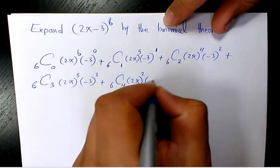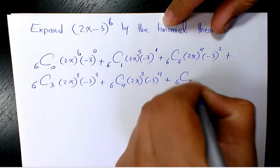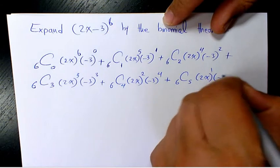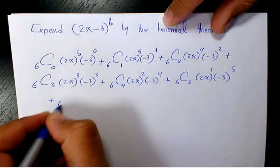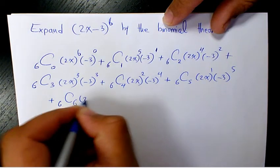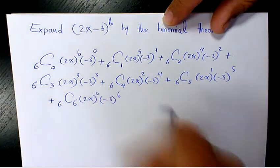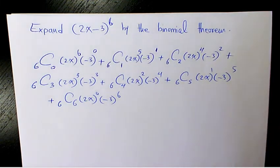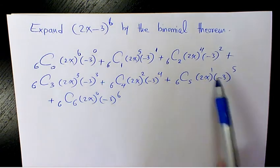Plus 6C4 times (-3)^4, plus 6C5 times (2x)^1 times (-3)^5, and finally 6C6 times (2x)^0 times (-3)^6. Since the index is 6, we need to have 7 terms: 1, 2, 3, 4, 5, 6, 7 terms.